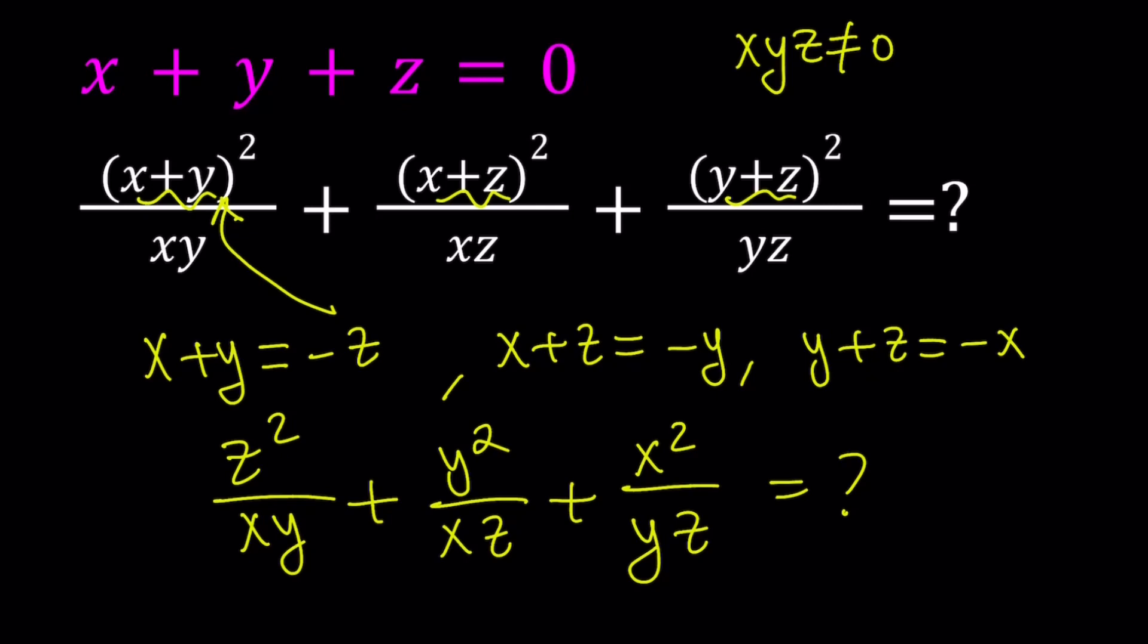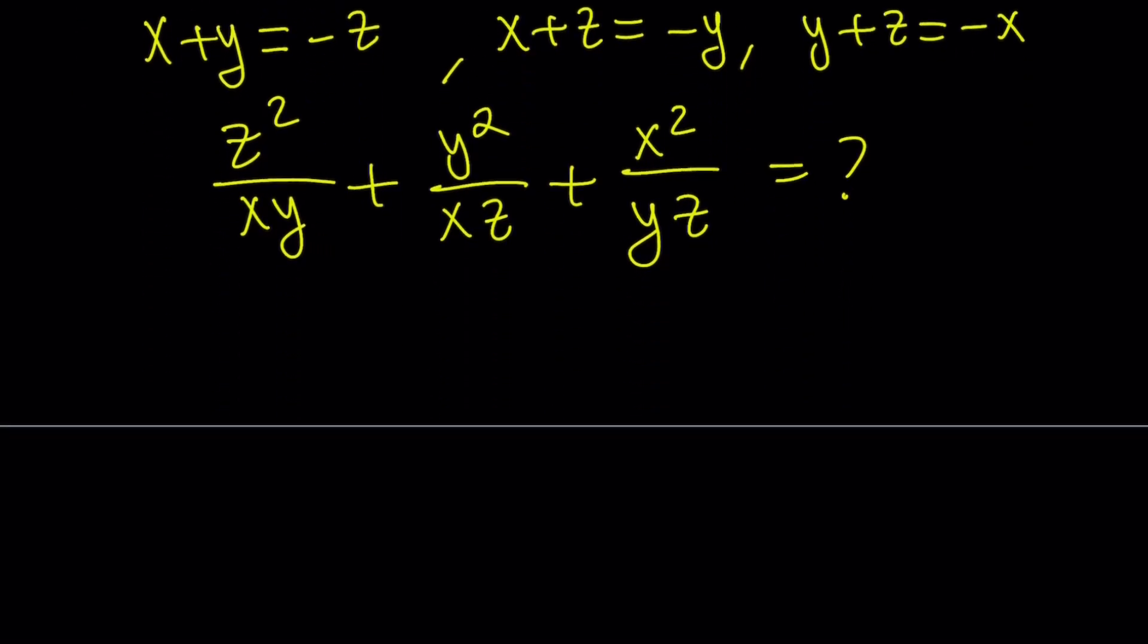How do you do that? The only thing I know is x plus y plus z is equal to 0, and I already used it. So how do you proceed? So here's what we're going to do next. Let's go ahead and make a common denominator. If we do, we're going to have to multiply this by z, this by y, and this by x. So that's going to give me the following: z cubed plus y cubed plus x cubed over x, y, and z.